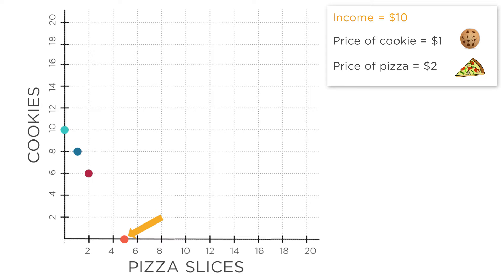Finally, in economics, we usually assume you can get a fraction of a cookie and a fraction of a slice of pizza, which means we can connect the dots.